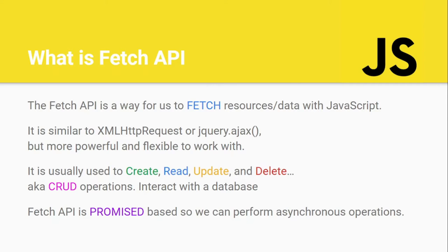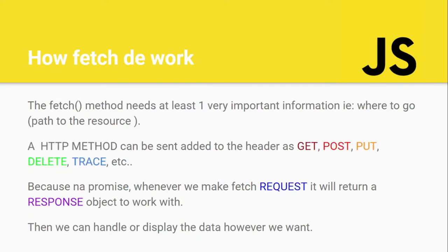The Fetch API helps us perform CRUD operations - Create, Read, Update, and Delete. Maybe you want to create something in a database, read something from a database, update or delete something. The Fetch API is promise-based and performs asynchronous operations, meaning we don't have to wait for something to finish before moving forward - it's very flexible and powerful.